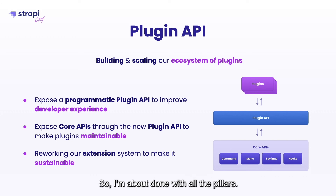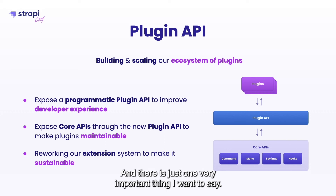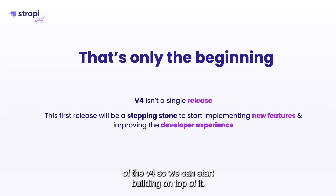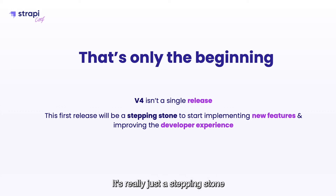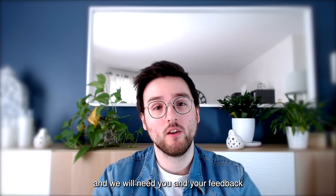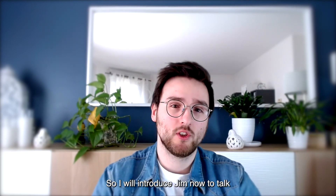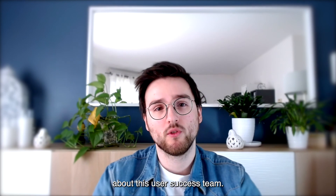I'm about done with all the pillars, but there is one very important thing I want to say: it's only the beginning of V4. We have a lot of other ideas we want to explore and release, but the goal is really to make a first MVP release of V4 so we can start building on top of it. It's just a stepping stone and we will need you and your feedback to make it really better. I will now introduce Jim to talk about the user success team.